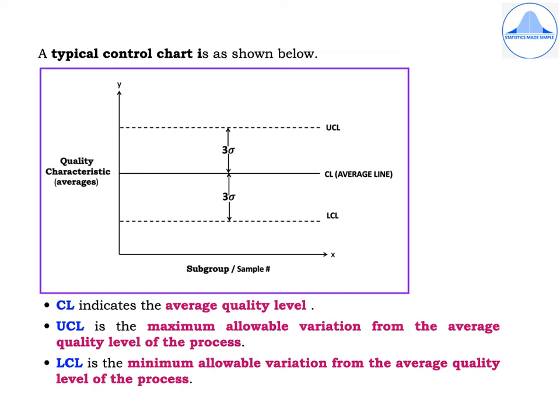The central line indicates the average quality level. UCL is the maximum allowable variation from the average quality level of the process, and LCL is the minimum allowable variation from the average quality level of the process.